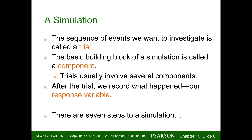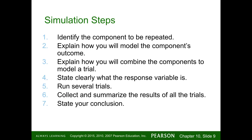There are seven steps to a simulation: first, identify the component you want repeated; second, explain how you will model the component's outcome; third, explain how you will combine the components to model the trial; fourth, state clearly what the response variable is; fifth, run several trials; and sixth, collect, summarize, and state your conclusion.